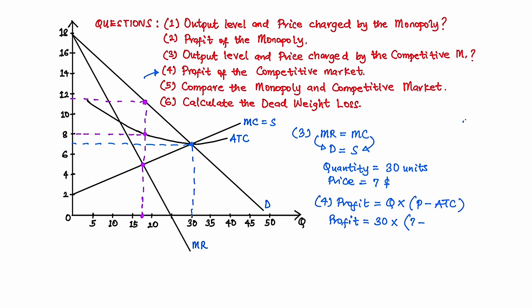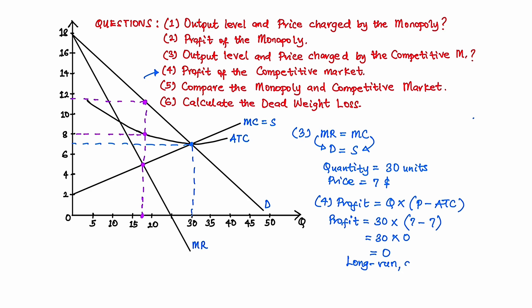Going from the quantity all the way up to the average total cost curve, we notice that we get the same point as the profit maximization point. This means the average total cost is also $7. So calculating the profit, we have 30 multiplied by (7 minus 7), which equals zero. The total profit for the competitive firm is zero, and this makes sense because this is the profit of the perfectly competitive firm in the long run as they always break even — that is, zero economic profit.